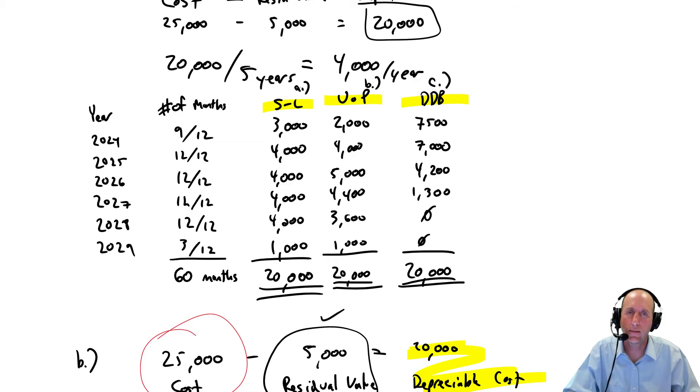Why do we have these different methods? They all serve different purposes. Straight line, the simplest, and it certainly solves that problem. Units of production is useful. If you notice, in years where we drove the car the most, we depreciated it the most. In years where we drove the car the least, we depreciated it the least. So there's some intuitive sense. The more you use an asset, the more you depreciate it. The less you use an asset, the less you depreciate it. Double declining balance is by far the most aggressive. It says this asset loses value quick in the early years. Let's depreciate it quick in the early years. And look at those first two years compared to the other methods, way higher, and then less depreciation in the later years.